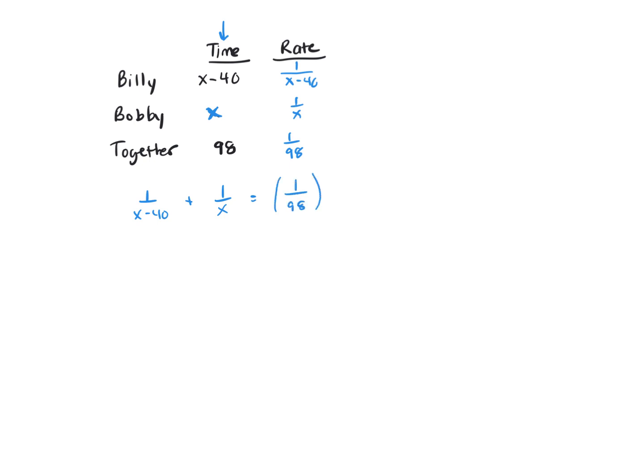And that's your equation, and now you need to clear your fractions by multiplying every term on both sides by the LCD. And the LCD would be 98, and X, and X minus 40.